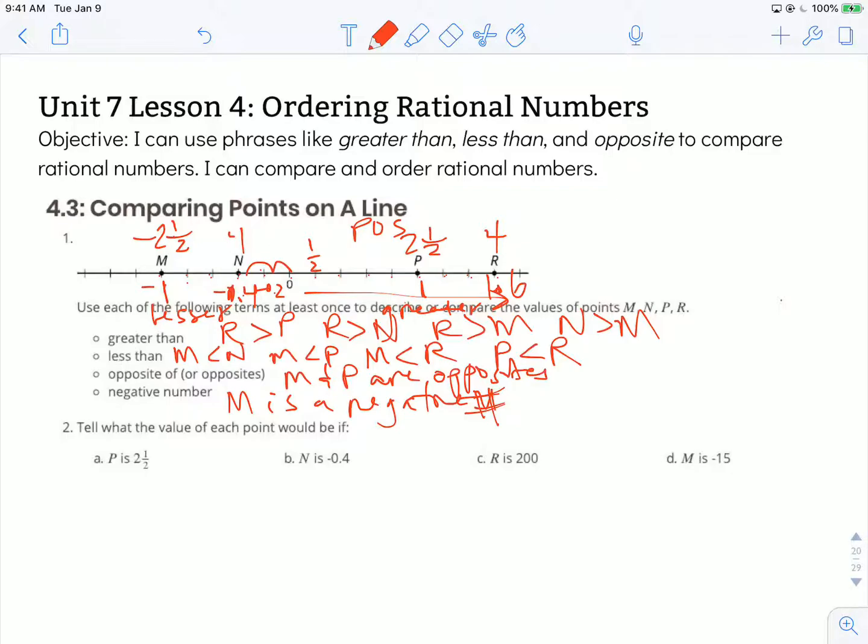We could continue going and looking at these tick marks and how it might be divided and determine what the other values would be. If we consider how many jumps does it take to get to that particular point, we can use that as a divisor to help us figure out what each of those tick marks is equal to. Again, our objective was I can use phrases like greater than, less than, and opposite to compare rational numbers. I can compare and order rational numbers. This is a good question. Thanks for watching.